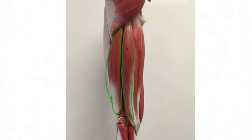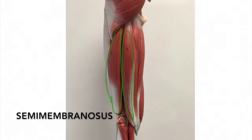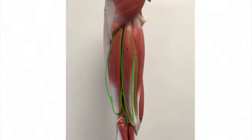This is a posterior lateral view of the left lower limb. In this view, you can see the gluteus maximus. Its origin is the ischial tuberosity, and its insertion is the medial condyle of the tibia. Its action is to flex the lower leg and extend the thigh.